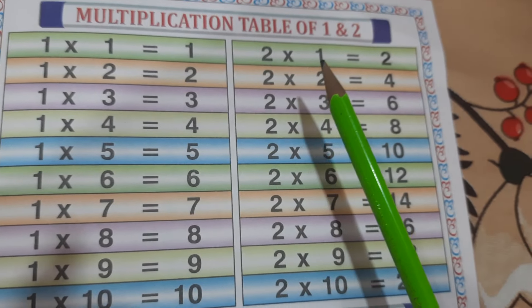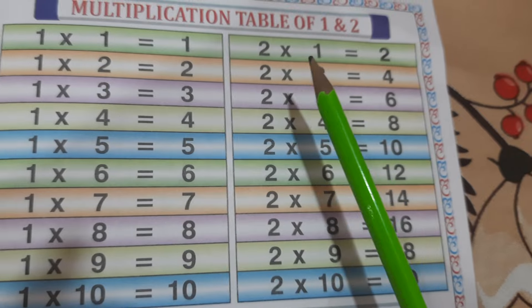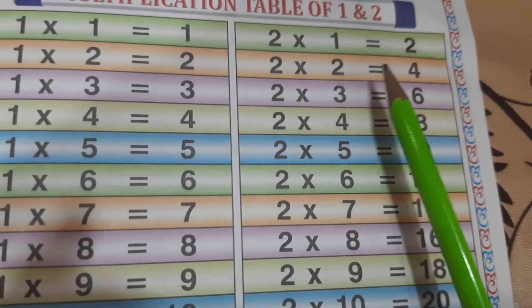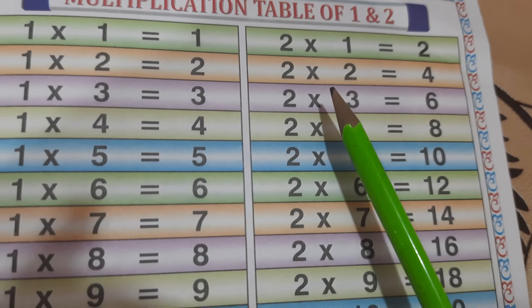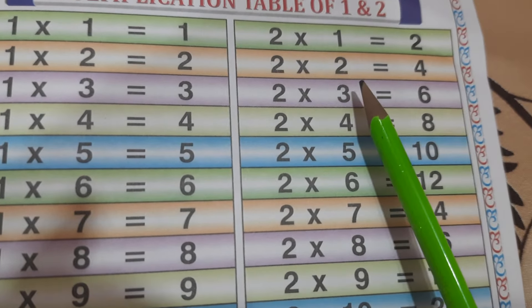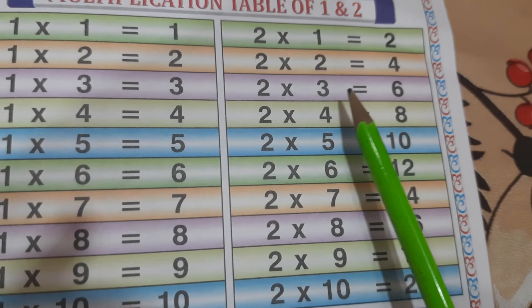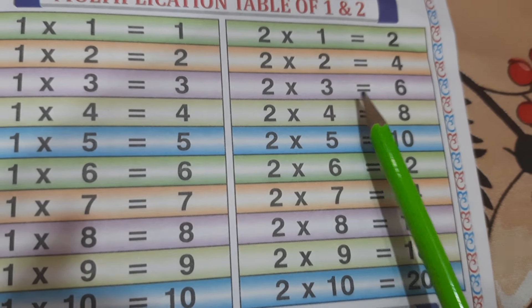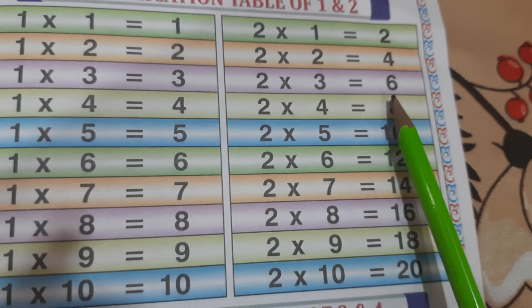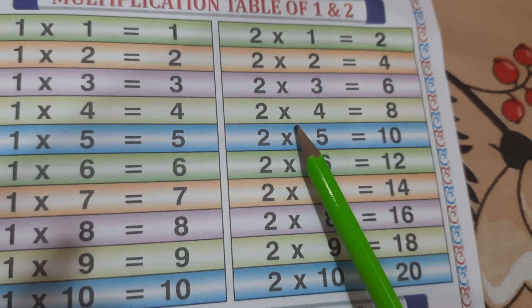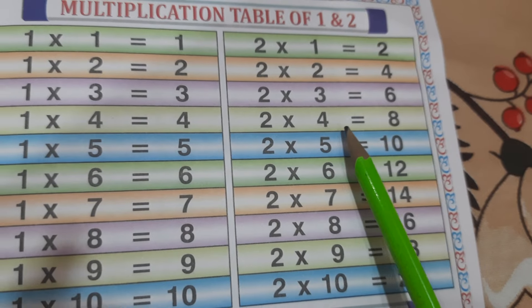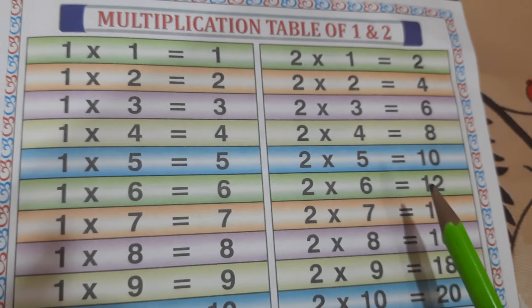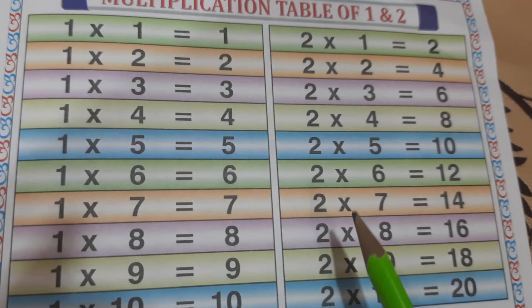Table of 2. 2 1s are 2. 2 2s are 4. 2 3s are 6. 2 4s are 8.